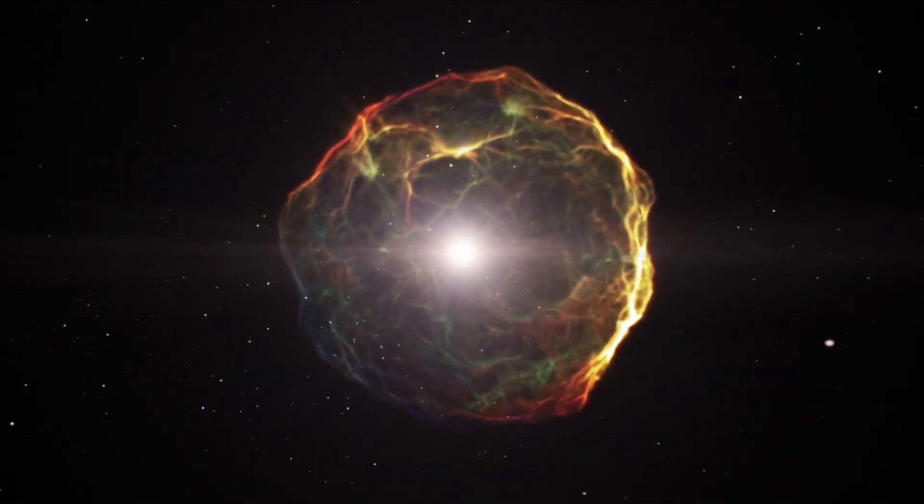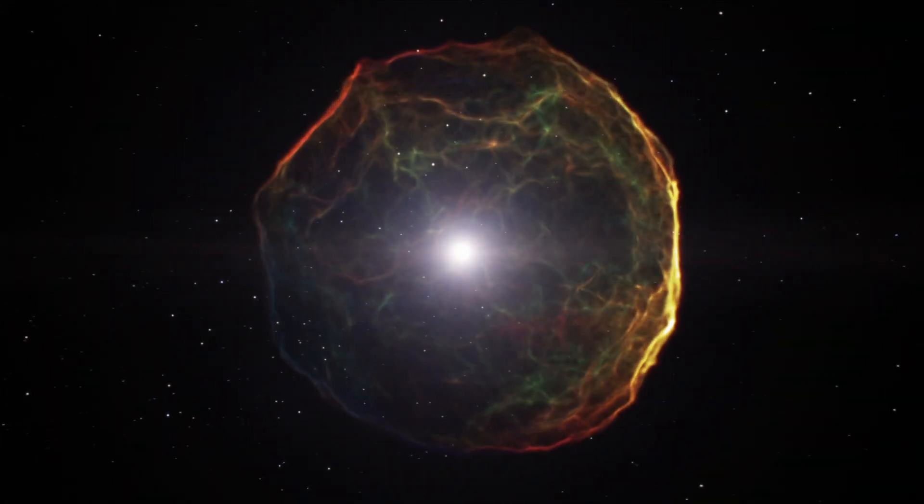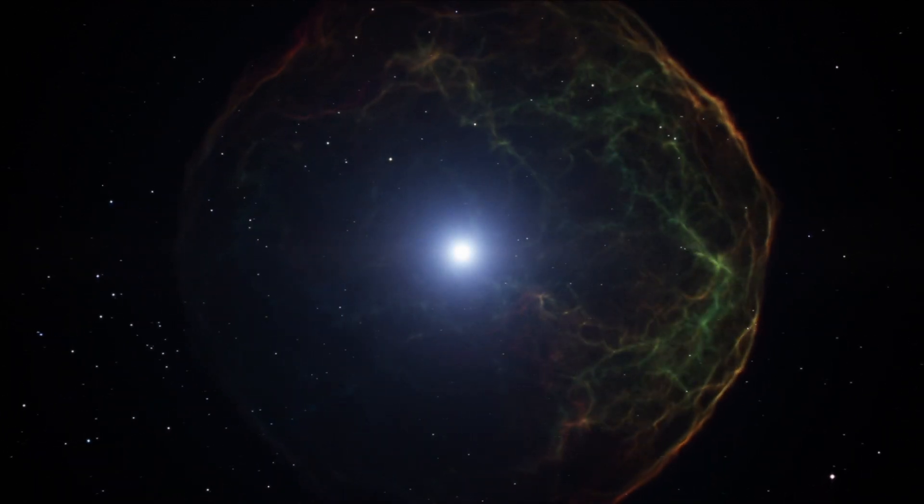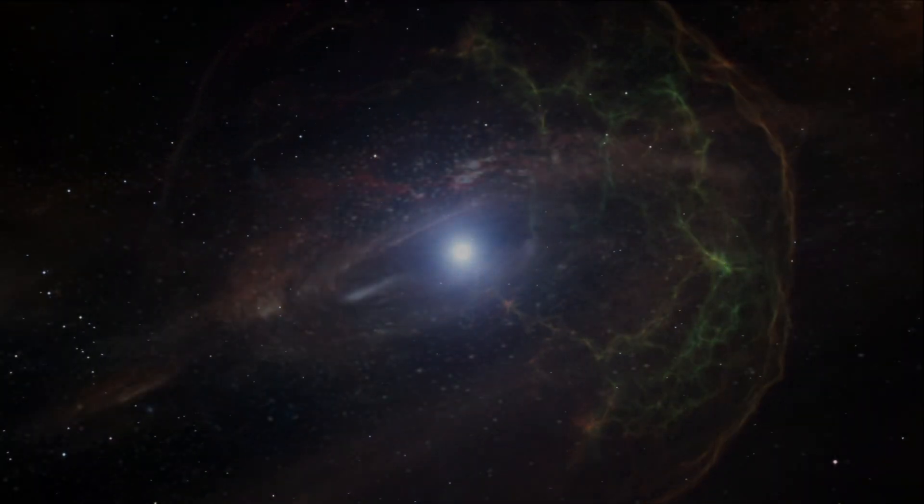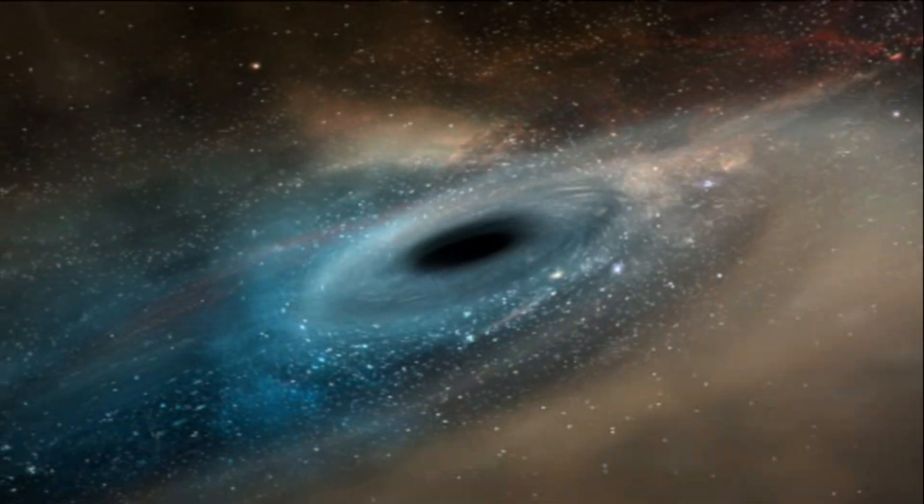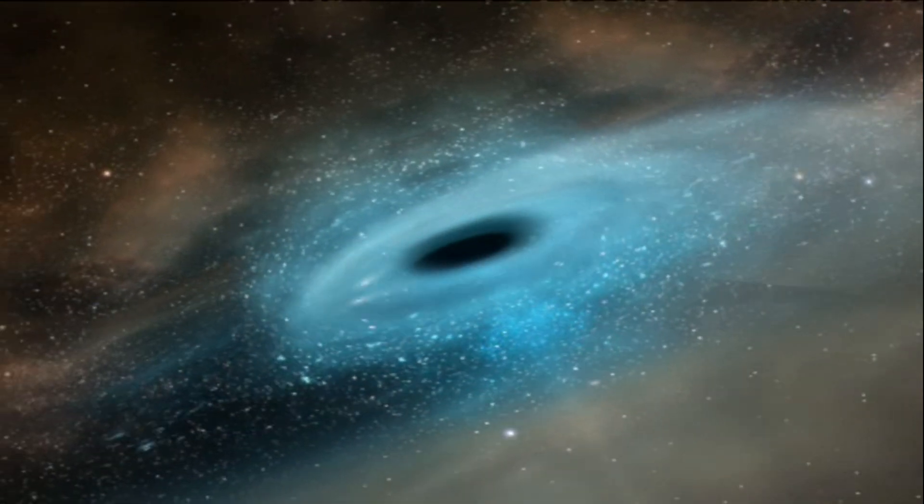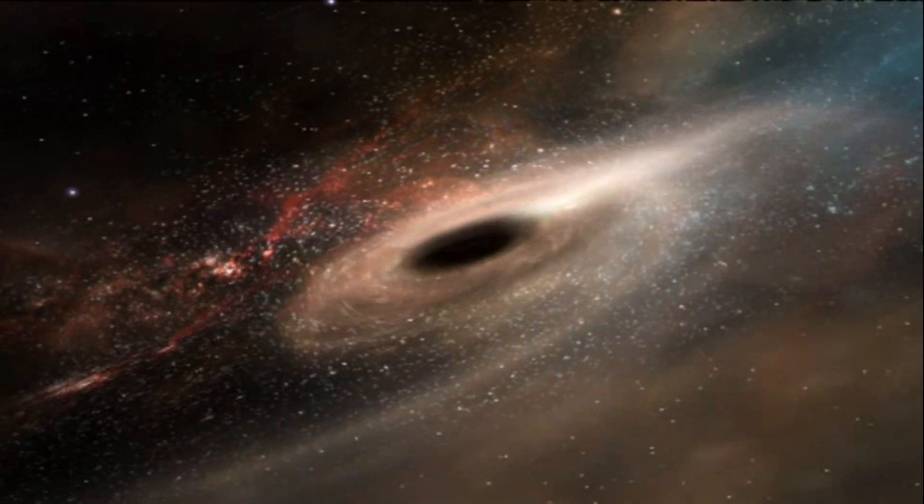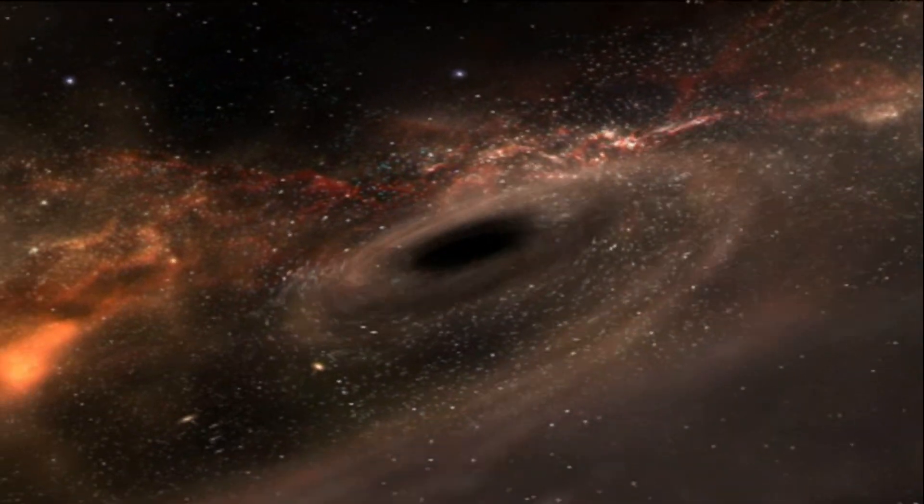But if the collapsing star is greater than about 20 times the mass of the sun, its core isn't strong enough to stop the implosion. In fact, there is no mechanism that can prevent such a star from collapsing into a black hole. Depending on the initial size of the imploding star, the resulting stellar mass black hole can reach up to about 100 or more times the mass of the sun.